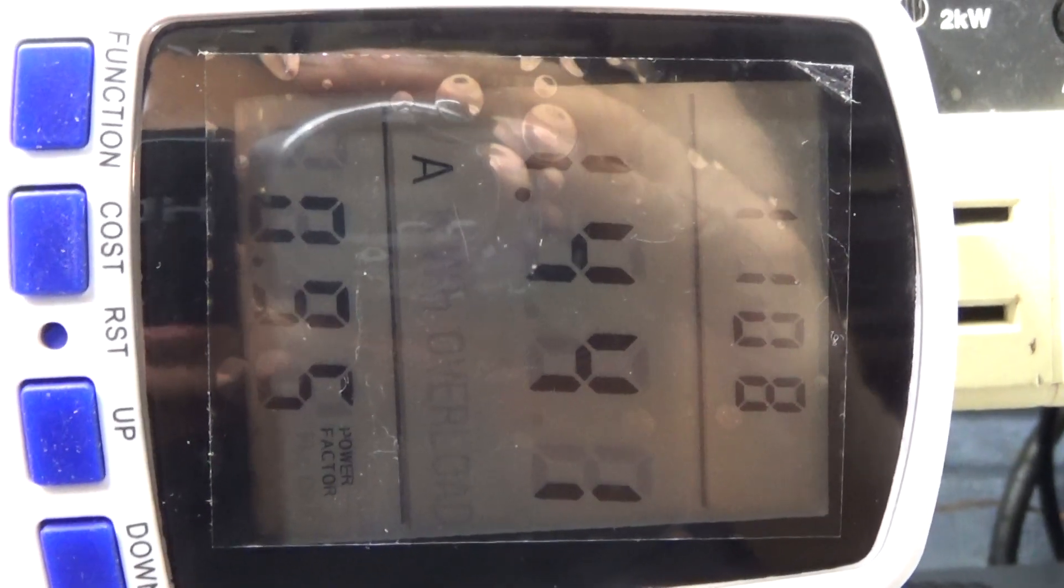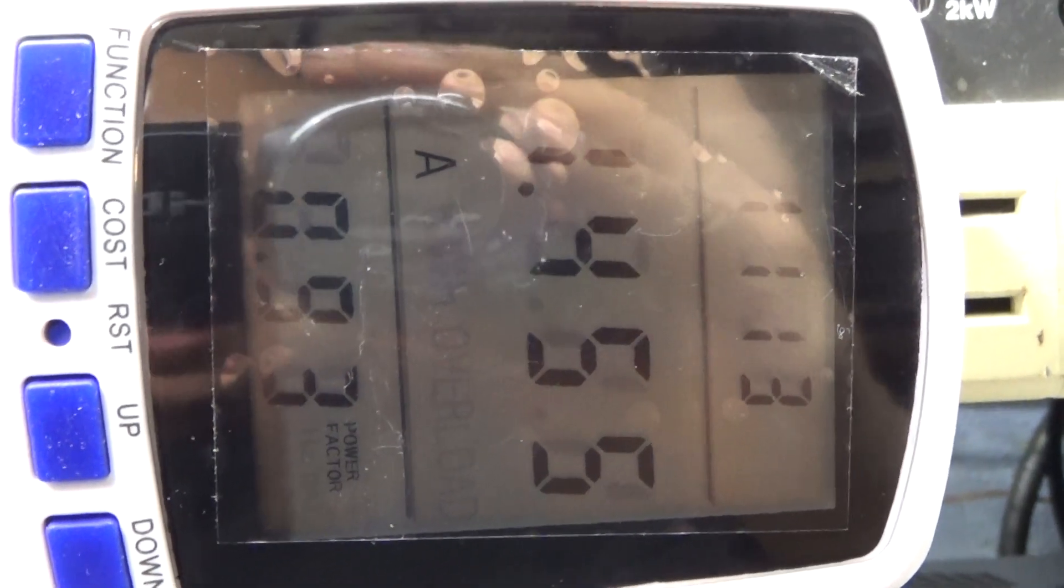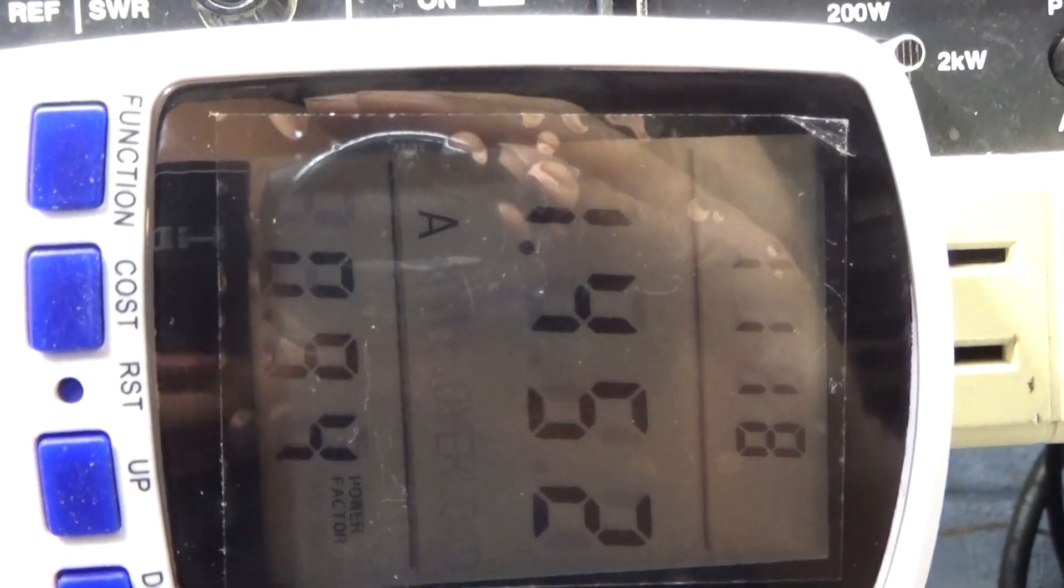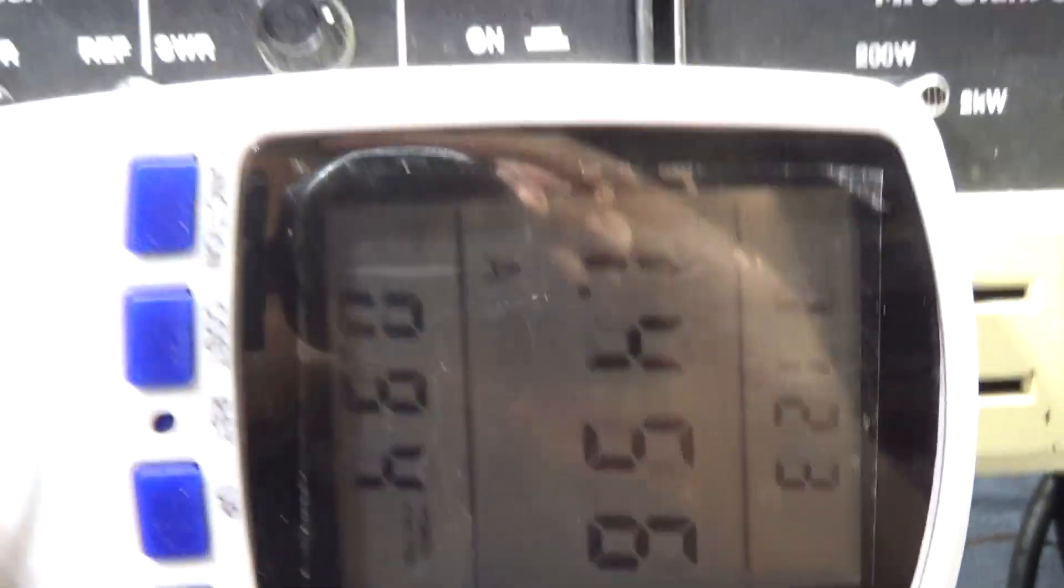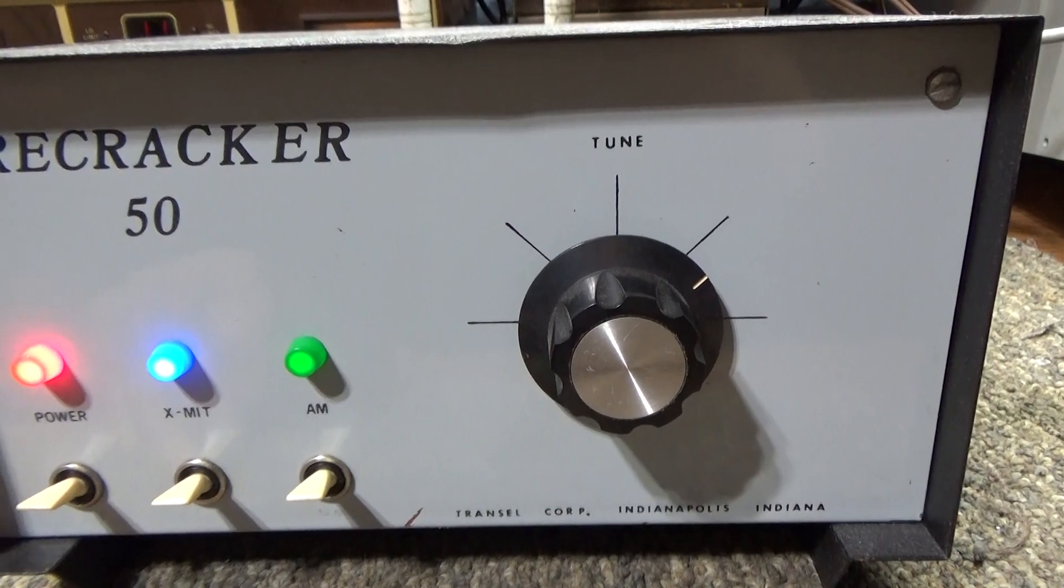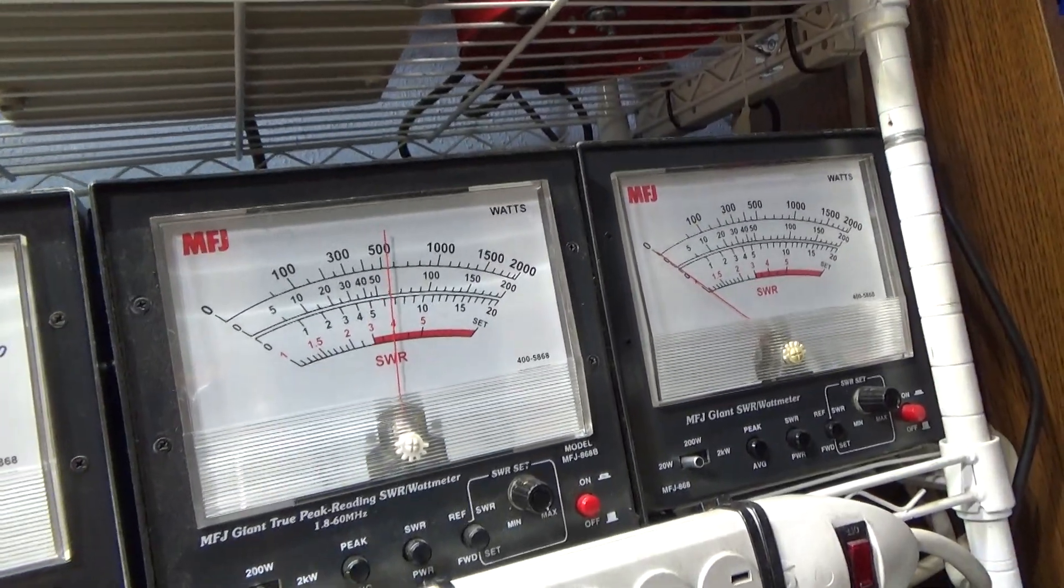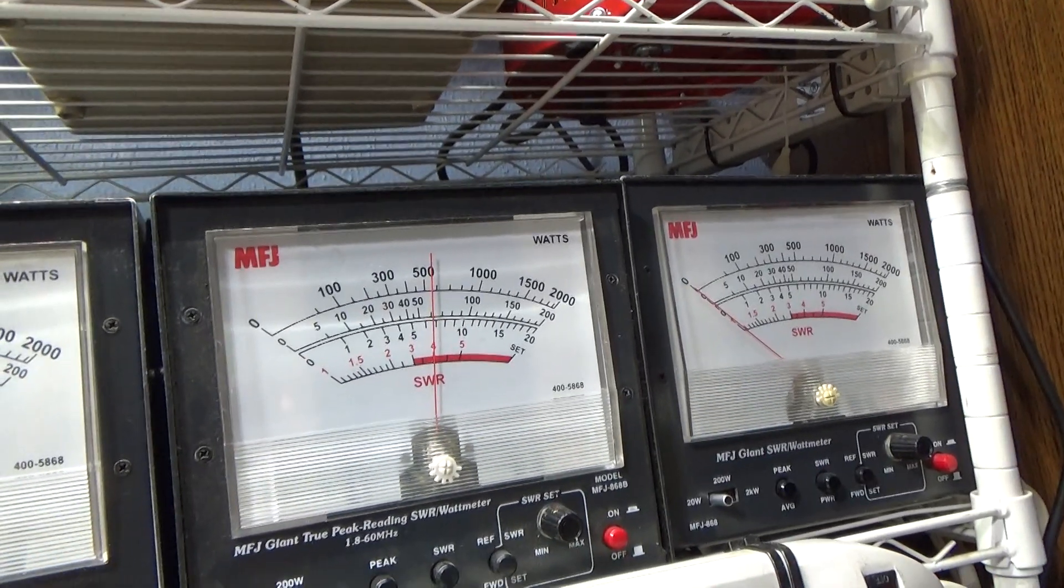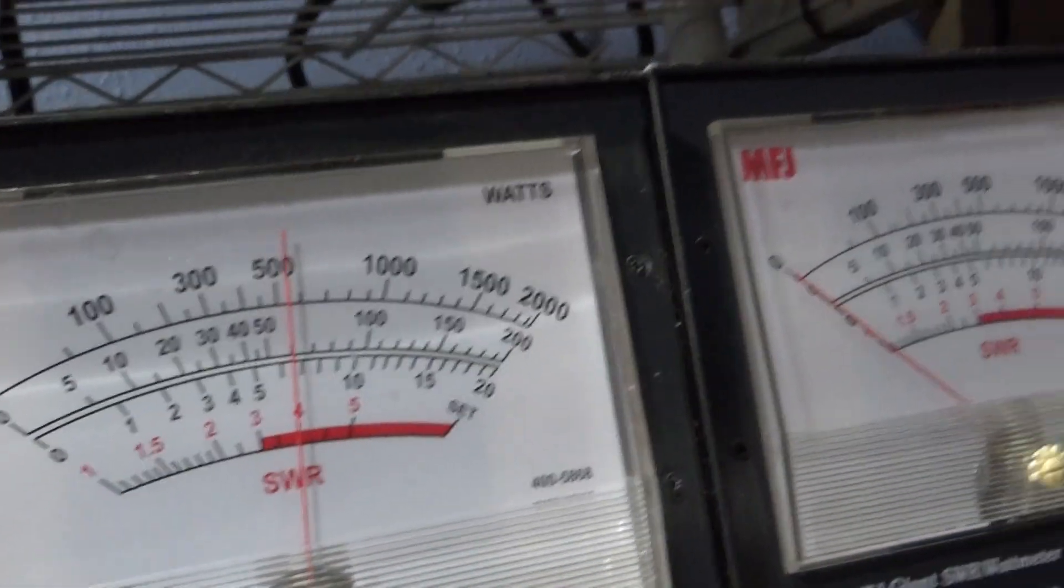1.4 amps is about 1.4 times 120, approximately about 160-170 watts, something like that. I used to be good at math but I'm old and it's late. When I key down, this amp jumps up another 100-120 watts or so, and with efficiency and all that it's putting out 60-65 watts. So it's pulling what it's supposed to and putting out what it's supposed to.